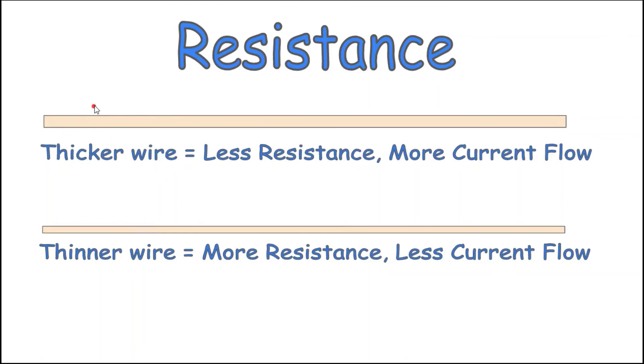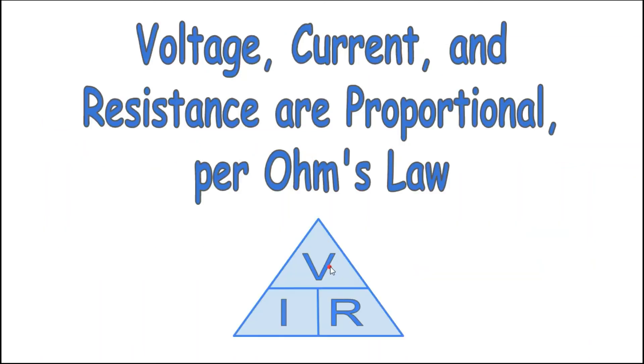Every conductor has resistance, which reduces the rate of current and thus electron flow through the wire. The thicker the wire, the less resistance there is and the more current that can flow through it. The thinner the wire, the more resistance there is and the less current that can flow through it for a given voltage.